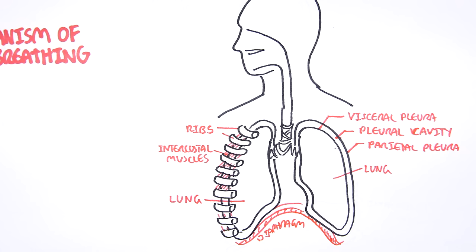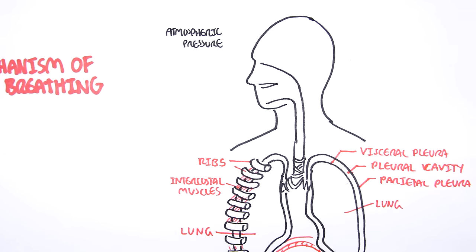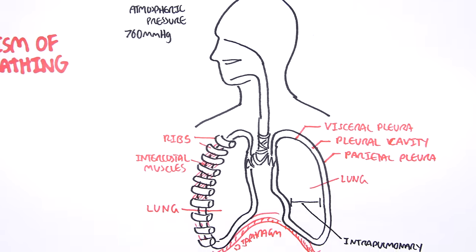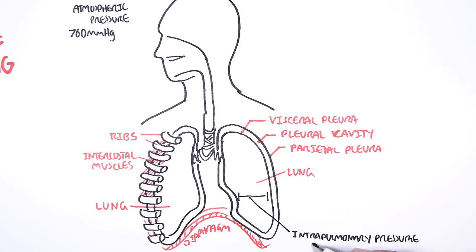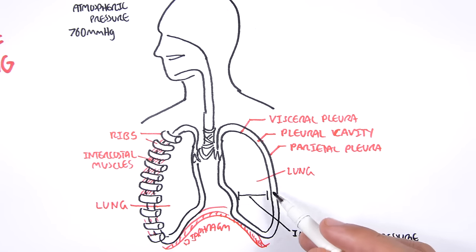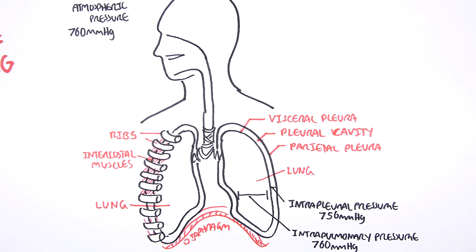Now that we know the muscles, let's learn about the pressures. Outside our body there is atmospheric pressure, which we measure to be 760 mmHg. In our actual lungs there is pressure called intrapulmonary pressure, which is balanced at 760 mmHg. We also have the intrapleural pressure, which is the pressure in the pleural cavity. For simplicity, we will focus only on atmospheric pressure and intrapulmonary pressure.